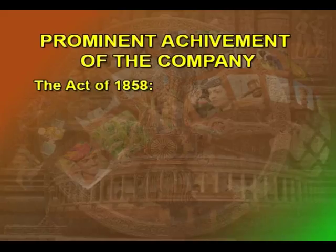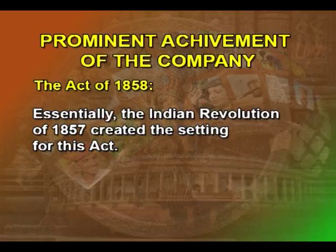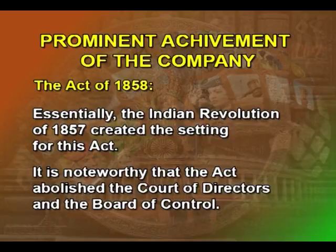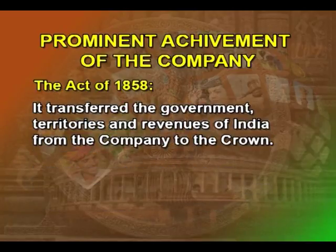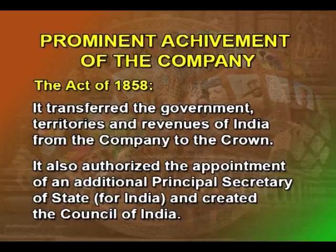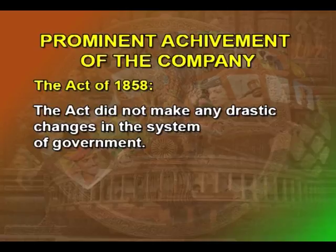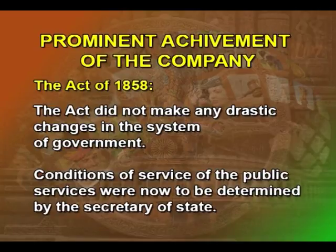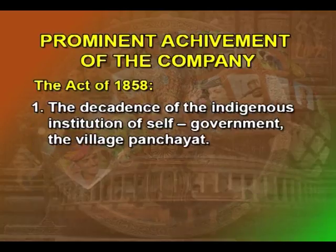The Act of 1858. The Indian Revolution of 1857 created the setting for the Act. It is noteworthy that the Act abolished the Court of Directors and the Board of Control. It transferred the government, territories, and revenues of India from the company to the Crown. It also authorized the appointment of a Principal Secretary of State for India and created the Council of India. Apart from this, the Act did not make any drastic changes in the system of government. The Governor-General continued to be all-powerful. Conditions of service of the public services were now to be determined by the Secretary of State.